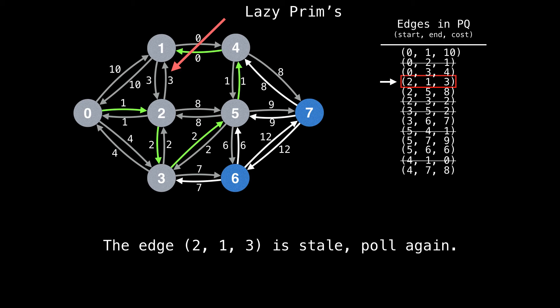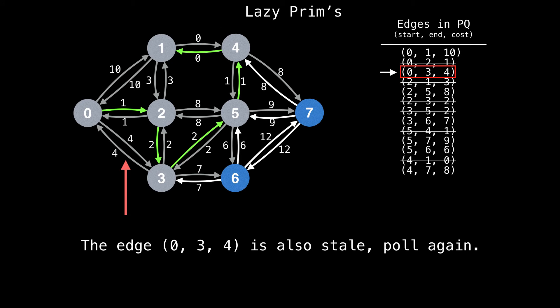Alright, notice that the next best edge we pull from the priority queue is an edge which already points to a visited node, node one. This means that the edge is outdated and stale because we found a cheaper path to node one, so we can safely ignore this edge and pull again. The next edge is also stale, so let's keep pulling.